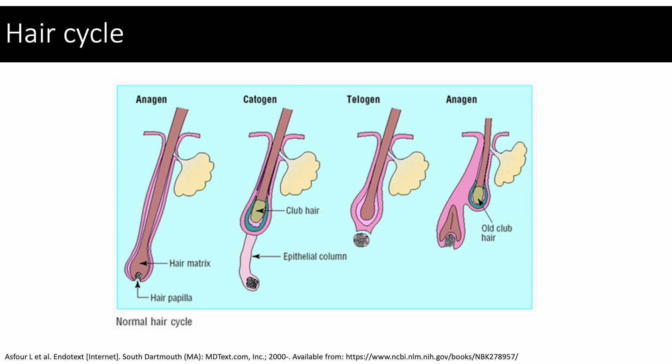Telogen phase is the resting phase, which approximately lasts three months. In this phase, the root of the hair follicle is detached from the hair follicle and will eventually be shed. After the telogen phase, the hair undergoes another anagen phase to produce new hair that grows out of the same follicle.